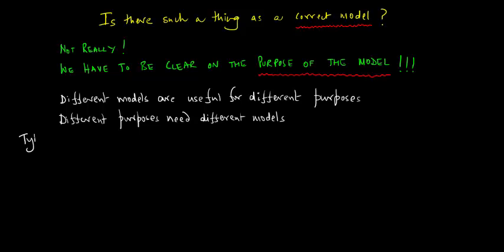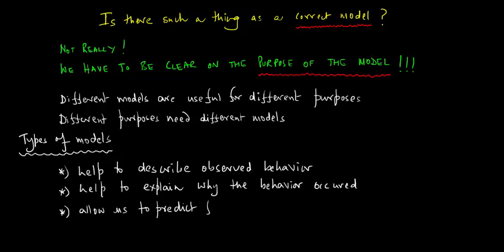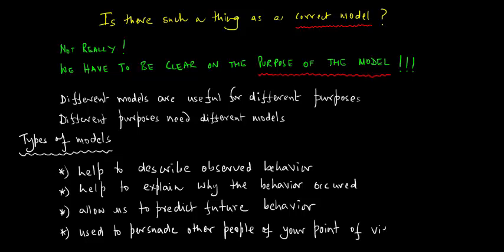There can be different types of models. Some merely help to describe observed behavior. Others help to explain why the behavior occurred in the first place. We have models that would allow us to predict future behavior. And we could also have models which are used to persuade other people of your point of view.